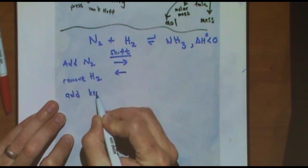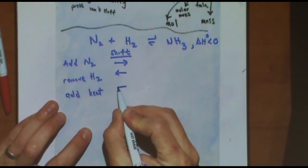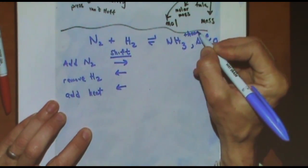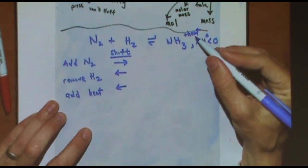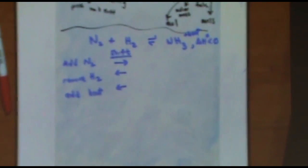Remove H2 shifts left towards the H2. Add heat, it's going to shift which way? Right or left? Left. Yeah. Because it's exothermic, you want to think of plus heat here. So there's heat as a product. So it has to shift away from the heat just like it was a reactant or another chemical.